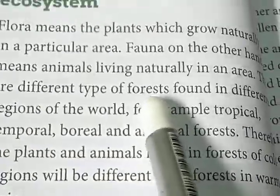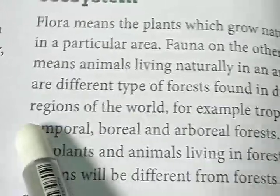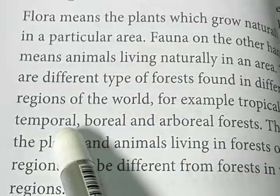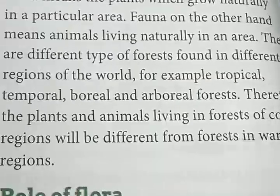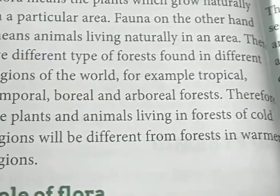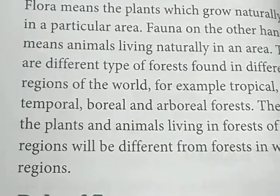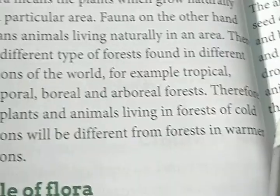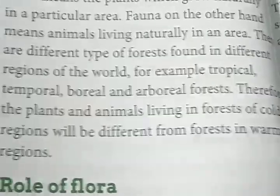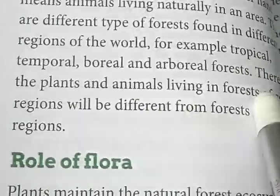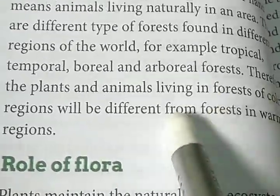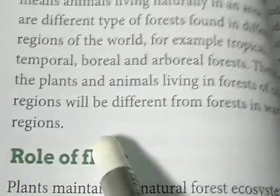There are different types of forests found in different regions of the world — for example, tropical, temperate, boreal, and arboreal forests. Therefore, the plants and animals living in forests of cold regions will be different from those in warmer regions. Different types of ecosystems are found in different regions; the cold region ecosystem is rather different from the warm region ecosystem.